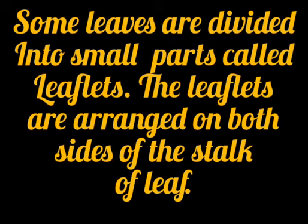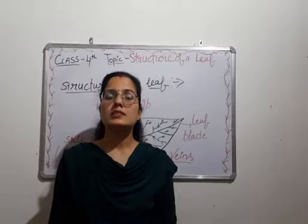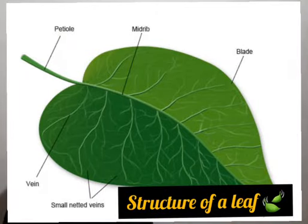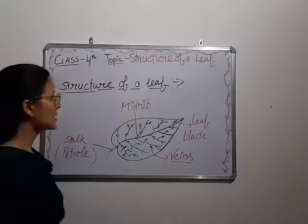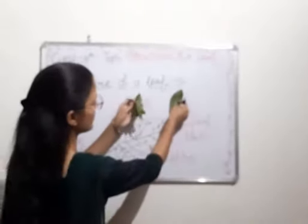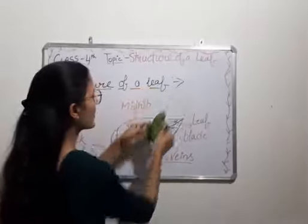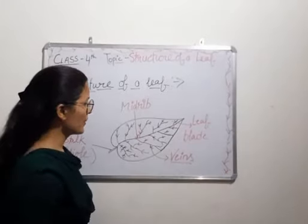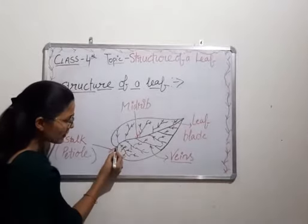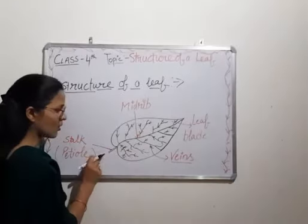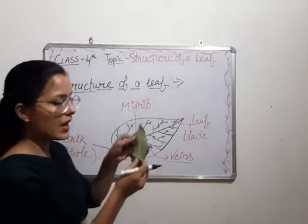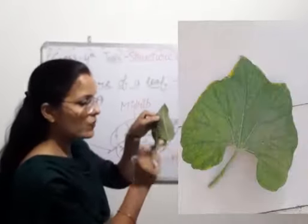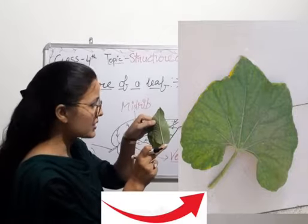Now the structure of a leaf — students, you can see this leaf and its parts. The parts of the leaves: the main point is the stalk. The leaf is attached to the stem with this main part called the stalk.